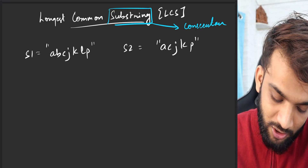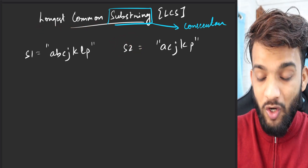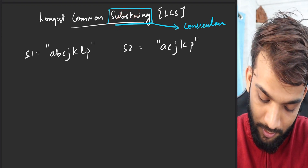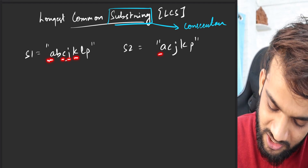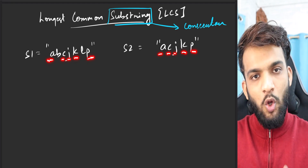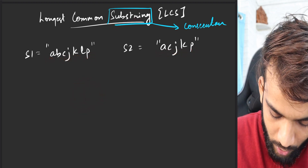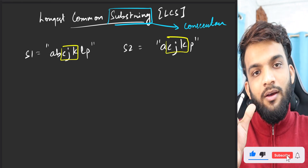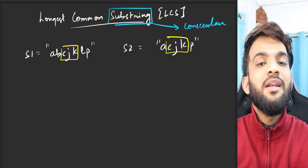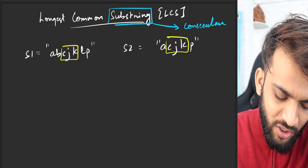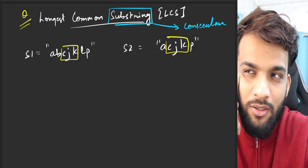Given strings s1 and s2, the question is Longest Common Substring. If I was talking about Longest Common Subsequence, you could say 'a c j k p' — length five — is the LCS. But for substring, the longest common substring would be 'c j k' and 'c j k', a length of three.